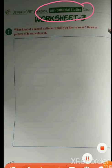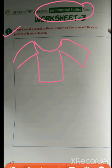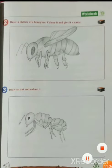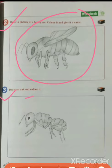Worksheet 3. What kind of school uniform would you like to wear? Draw a picture of it and color it. Next: Draw a picture of a honeybee, color it, and give it a name. Next question: Draw an ant and color it. Here we will draw the picture of an ant and color it. Thank you.